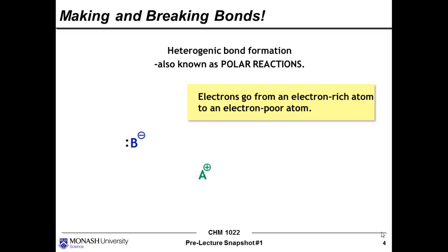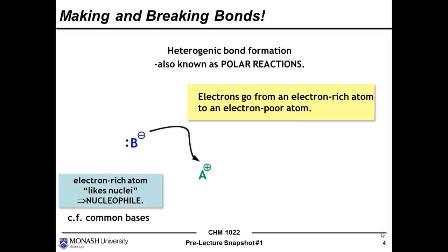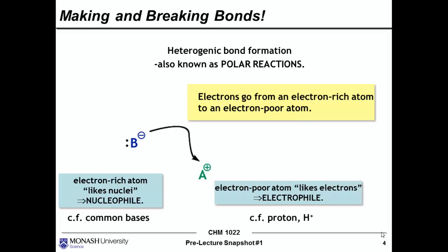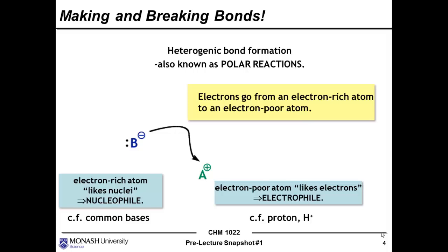Probably the most common reaction type you'll see throughout this semester is heterogenic bond formation, also known as polar reactions, where electrons go from an electron-rich atom to an electron-poor atom. One of the key skills for you is going to be knowing how to identify what is a nucleophile and what is an electrophile. A nucleophile is an electron-rich atom — it likes nuclei, which are positively charged. In contrast, an electrophile is an electron-poor atom that likes electrons. An example of an electrophile might be a proton.